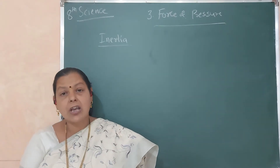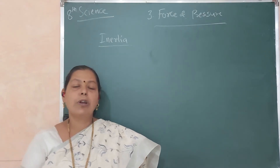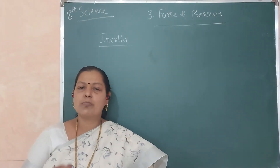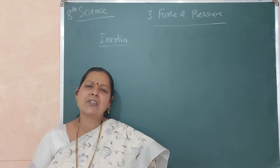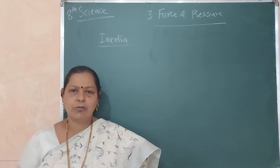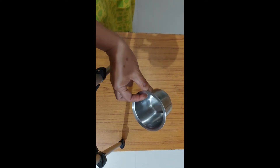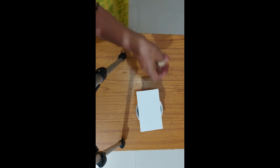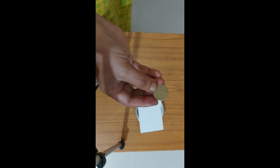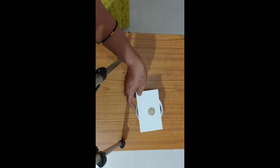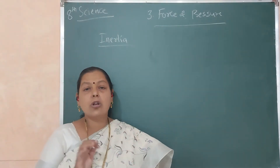Now some activities are given here and I am going to discuss these activities. The first activity: as you see on the screen, I have taken a glass, a postcard, and a five rupee coin. I placed the coin on the postcard, then I give a small jerk to the postcard. The conclusion of the first activity is that the coin tries to remain in the state of rest, so it falls into the glass.